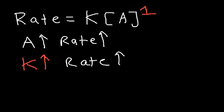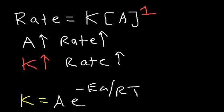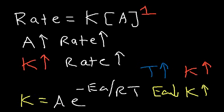As mentioned from the Arrhenius equation, k depends on the activation energy Ea and it depends on the temperature. So if you increase the temperature, the rate constant k will go up. However, if you decrease the activation energy, the rate constant k will also go up. Since Ea is in the exponent with a negative sign, it's opposite to the usual trend — when you decrease the activation energy, the rate of the reaction goes up because k goes up.